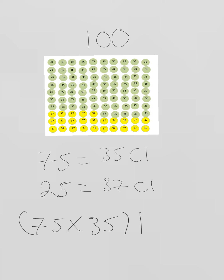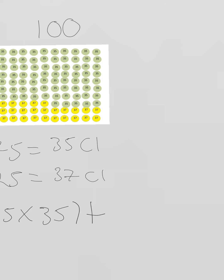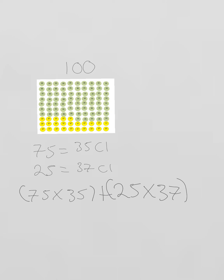We then add that to the other isotope. So we have 25 particles times 37 because there are 25 particles of chlorine-37. And then you simply divide the whole thing by 100 because there are 100 particles in total.